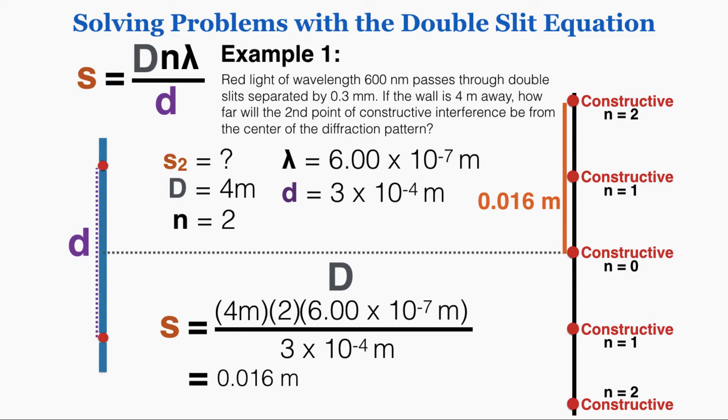When I plug in the values, I get s equals 0.016 meters. That is the distance between the central point of constructive interference and the second point of constructive interference. That's how you use that equation.